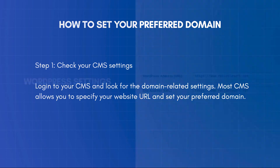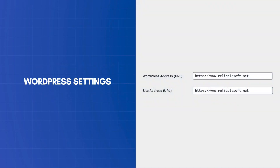If you're on WordPress, you can log into your WordPress dashboard and then click Settings and then select General from the left menu. You can set your preferred domain in the WordPress address and site address fields. In this example, I have selected my preferred domain to have the www in front. There is no advantage from doing so — it's just a matter of personal preference.